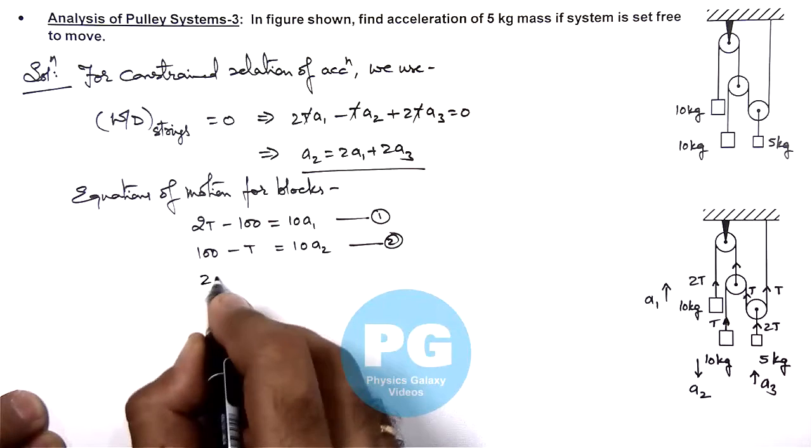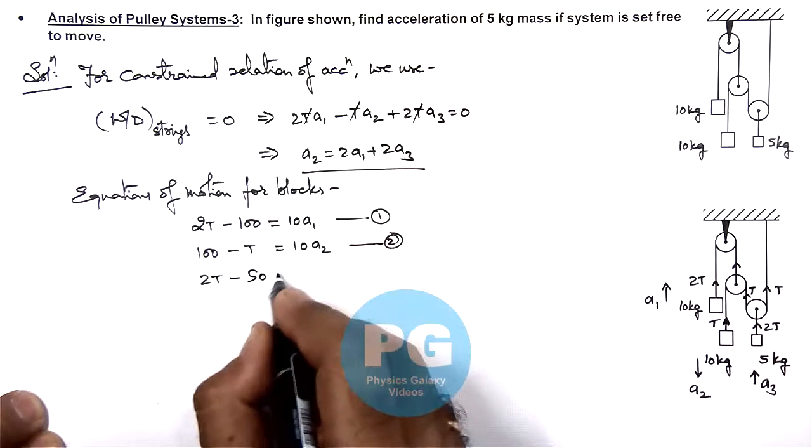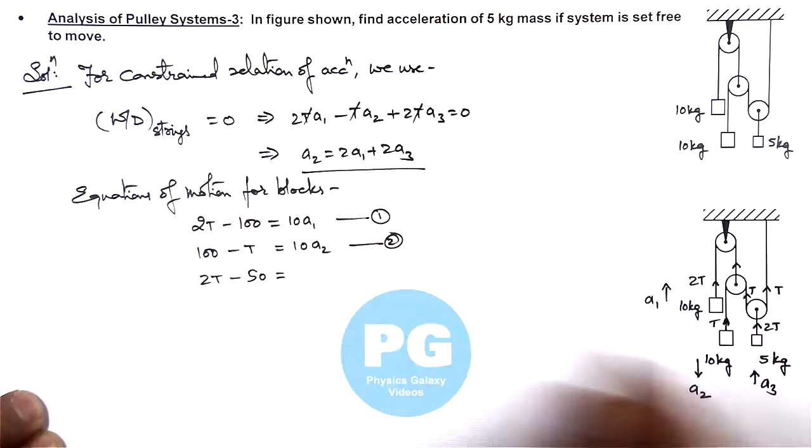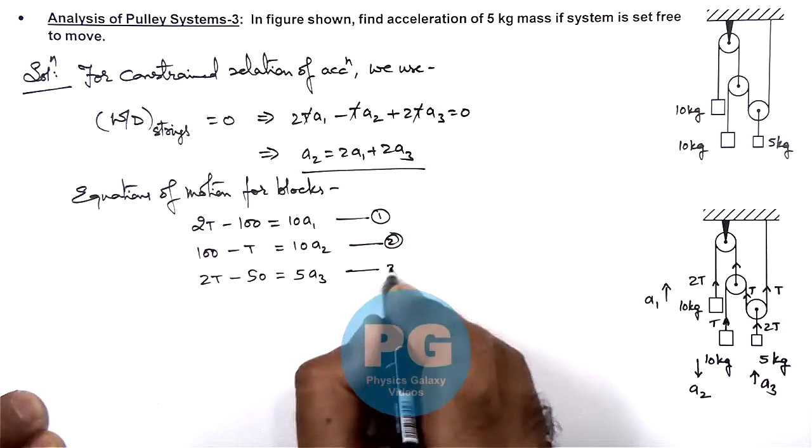And the third equation for this 5 kg, as we have considered it is going up, we can write upward force is 2t minus 5g is 50. Here I have taken g to be equal to 10 meter per second square and it is going up at a3, this is 5 a3, that is equation 3.